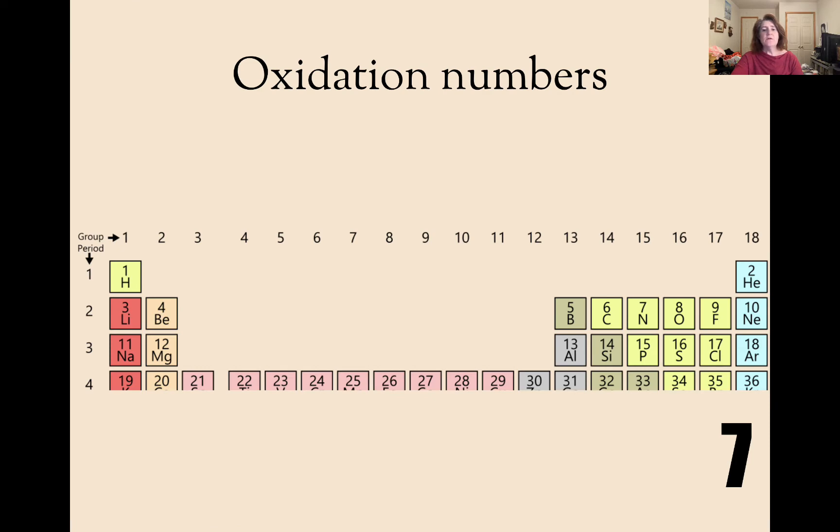So right now on your periodic table, you have the group numbers and the period numbers. Above the group numbers, you've written the valence numbers, and those are circled. Above those, you're going to write the oxidation numbers.